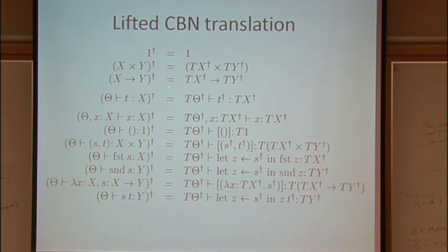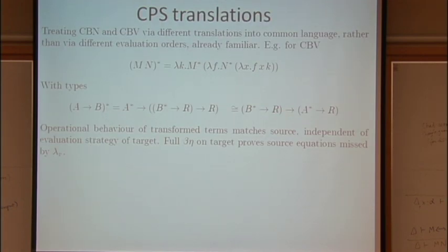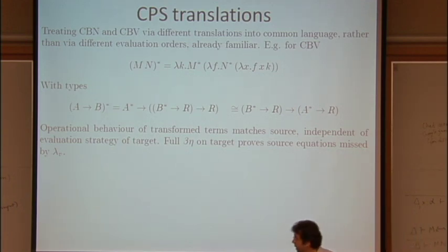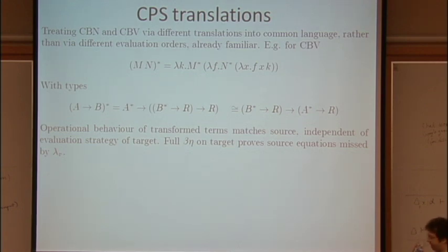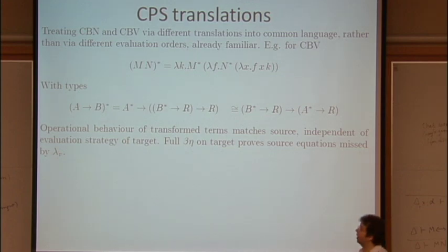It has a slightly different shape. You'll see here the functions in Haskell take computations to computations, which corresponds to the fact that the things that you pass are unevaluated. In fact, this notion of having a meta-language into which we can translate call-by-name and call-by-value languages and express their semantics via a common interpretation of the target language — it's something we've seen before. It goes back to at least Plotkin's work in 1975.